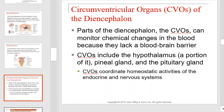Circumventricular organs, or CVOs, of the diencephalon. Parts of the diencephalon — the CVOs — can monitor chemical changes in the blood because they lack a blood-brain barrier. CVOs include the hypothalamus, the pineal gland, and the pituitary gland. CVOs coordinate homeostatic activities of the endocrine and the nervous system.